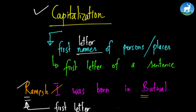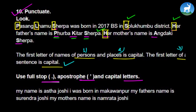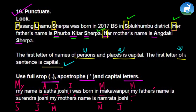Now let's punctuate the paragraph from the book. 'My name is Asta Josi' — M is capitalized as the beginning letter, A and J in Asta Josi are capitalized as a person's name, and there is a full stop at the end. 'I was born in Makwanpur' — I is capitalized, M in Makwanpur is capitalized as a place name, full stop. 'My father's name is Surendra Josi' — apostrophe after father, full stop. 'My mother's name is Namrata Josi.'